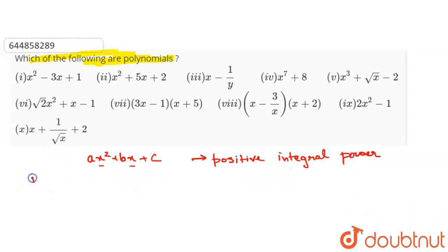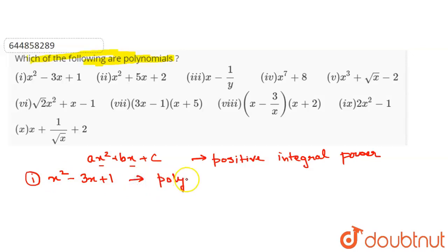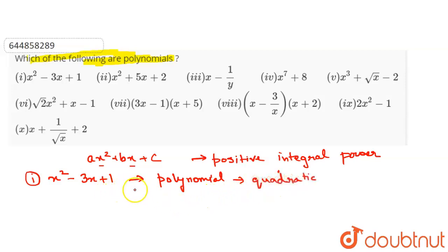Let us check the first question: x squared minus 3x plus 1. In this expression, all variables — x squared and x — have positive integral powers. Therefore this is a polynomial, and specifically it is a quadratic polynomial because the highest power is 2.